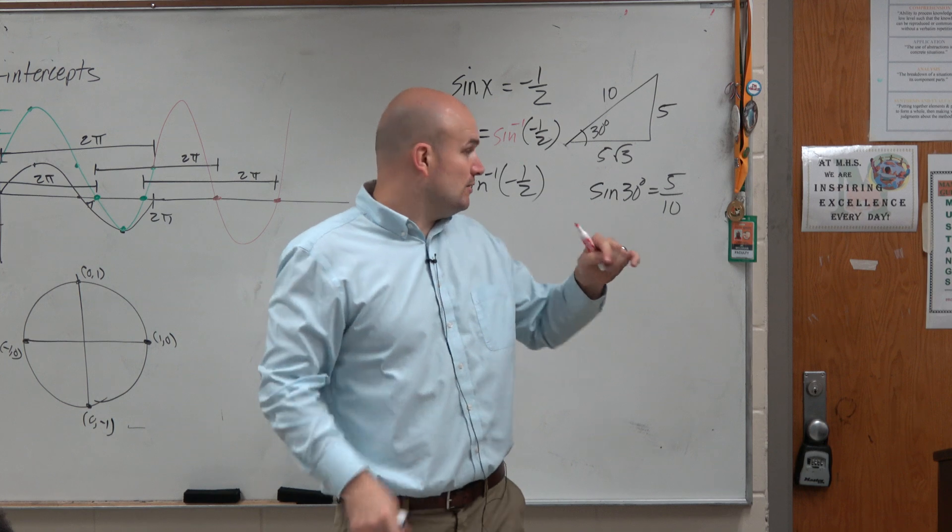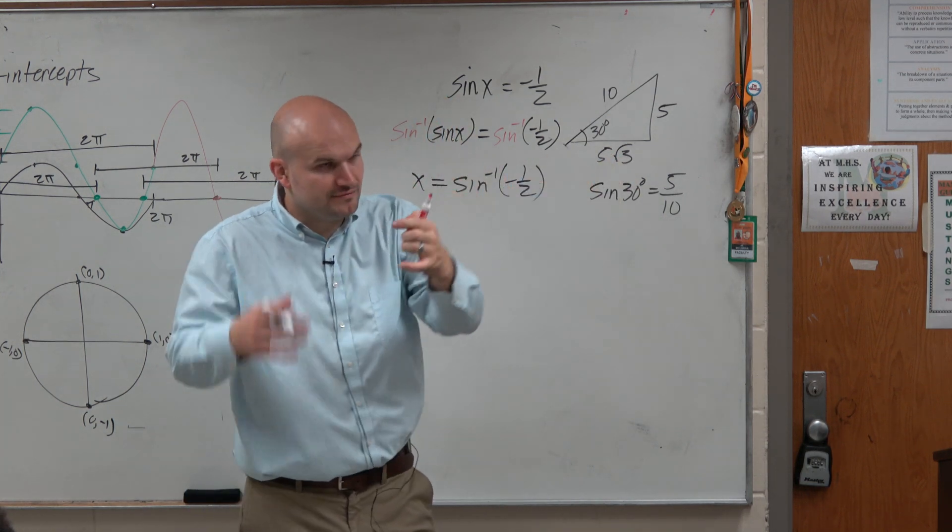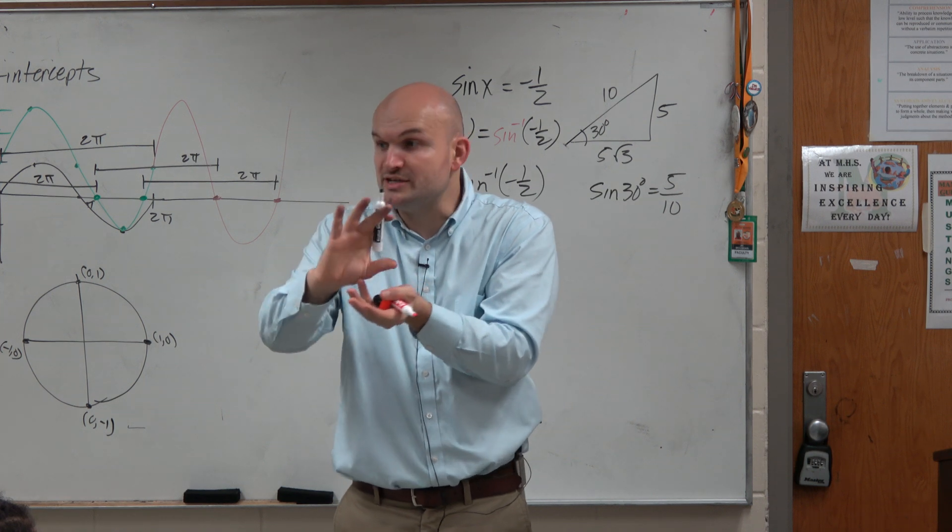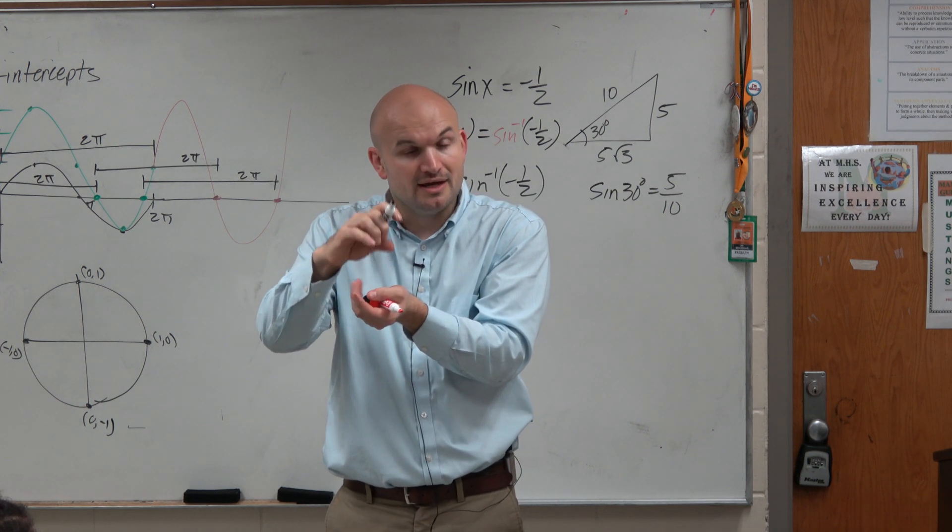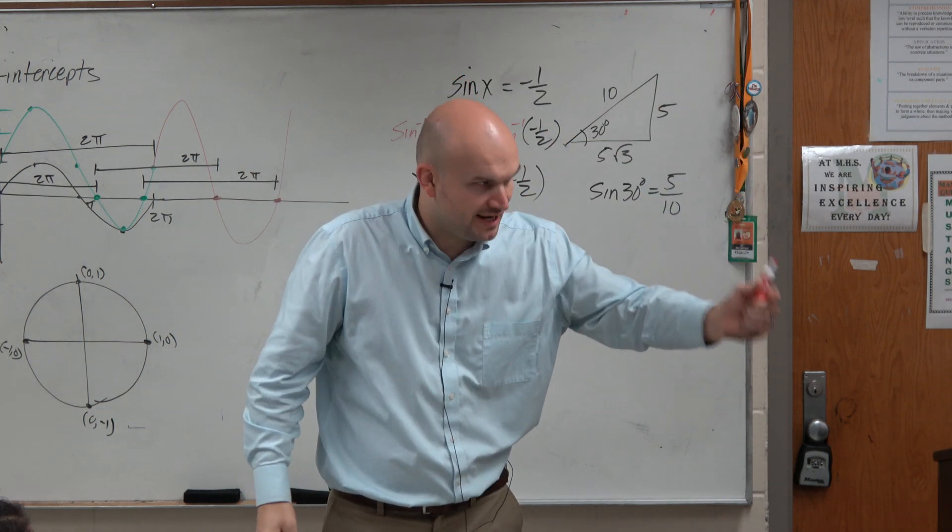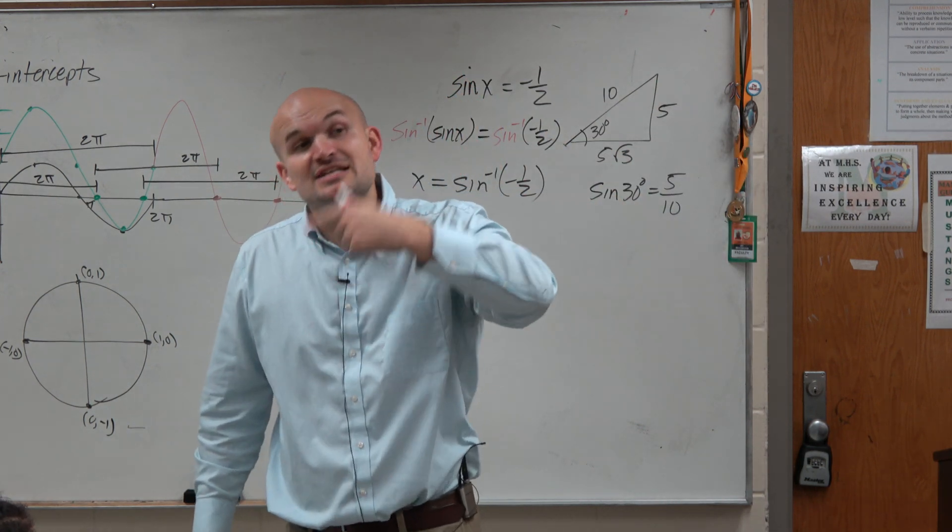So when you need to find a ratio, remember the three trigonometric functions: sine, cosine, tangent. Those are all ratios based on sides of the triangle, correct? And they're all relative to the angle. You always take the sine of an angle, cosine of an angle, tangent of an angle.